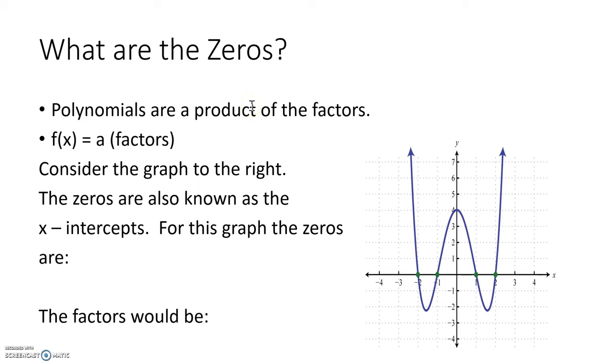First we need to know what are zeros. Polynomials are a product of its factors. To write the equation of a polynomial, we write f(x) is equal to A times its factors.